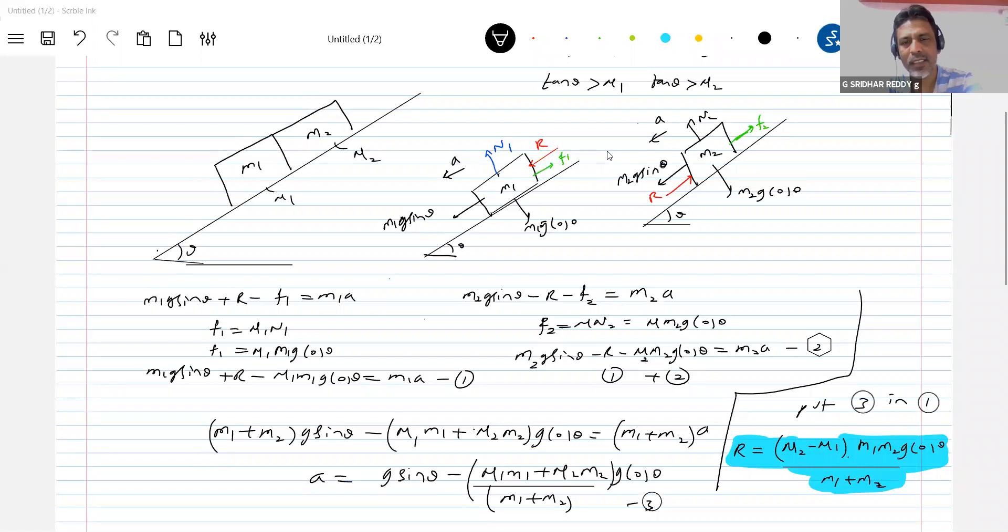If tan theta less than mu1, tan theta less than mu2, both the blocks will be at rest. They will not slide. No question of that.